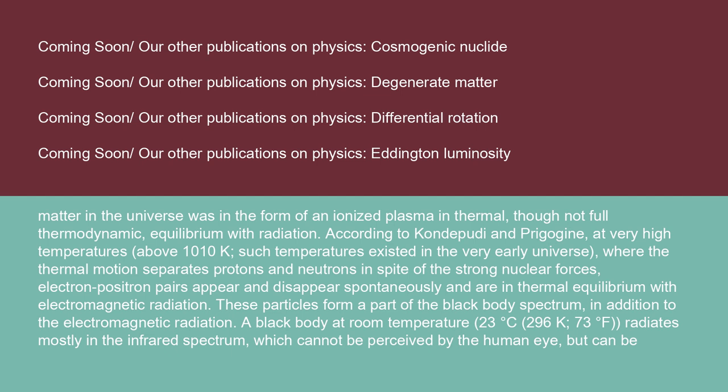According to Kondipudi and Prigogine, at very high temperatures above 10¹⁰ K — such temperatures existed in the very early universe — the thermal motion separates protons and neutrons in spite of the strong nuclear forces, and electron-positron pairs appear and disappear spontaneously, in thermal equilibrium with electromagnetic radiation. These particles form a part of the blackbody spectrum, in addition to the electromagnetic radiation.